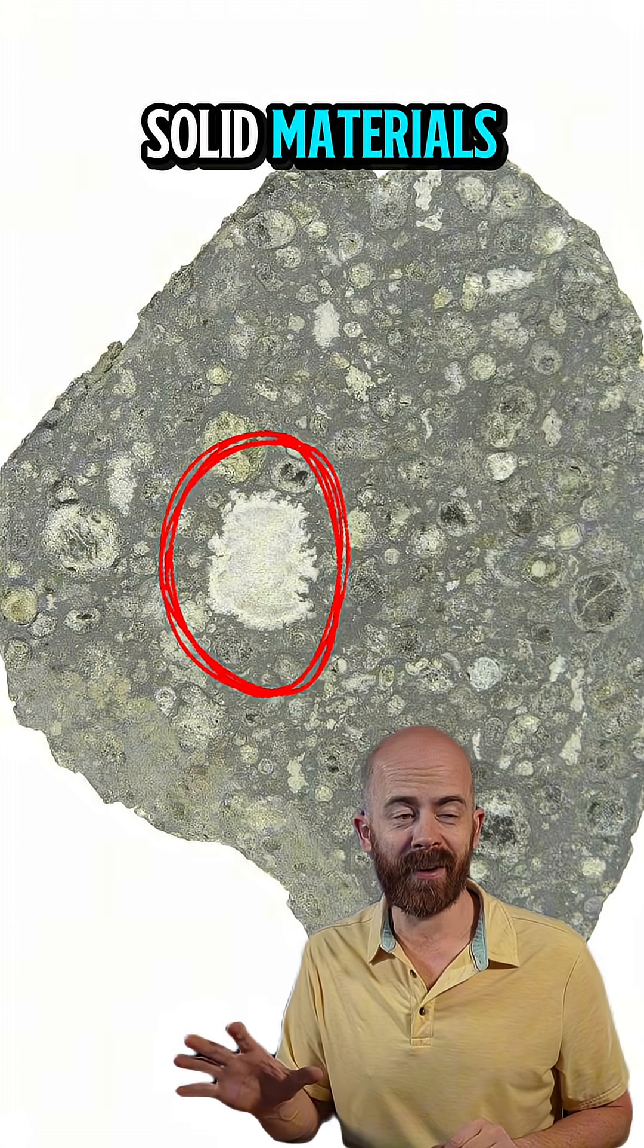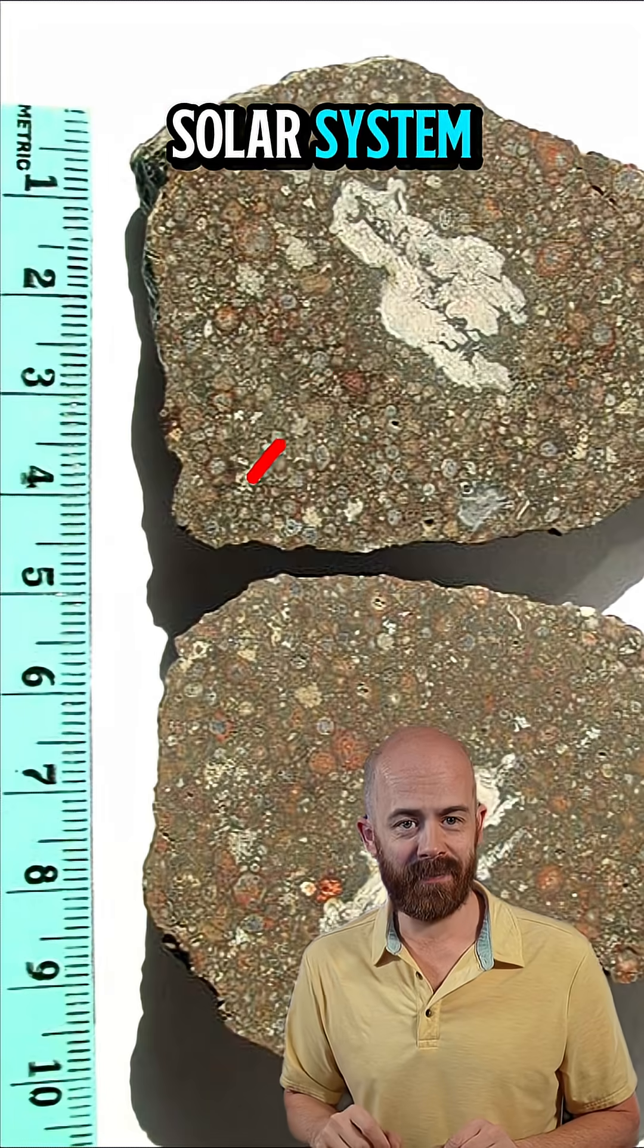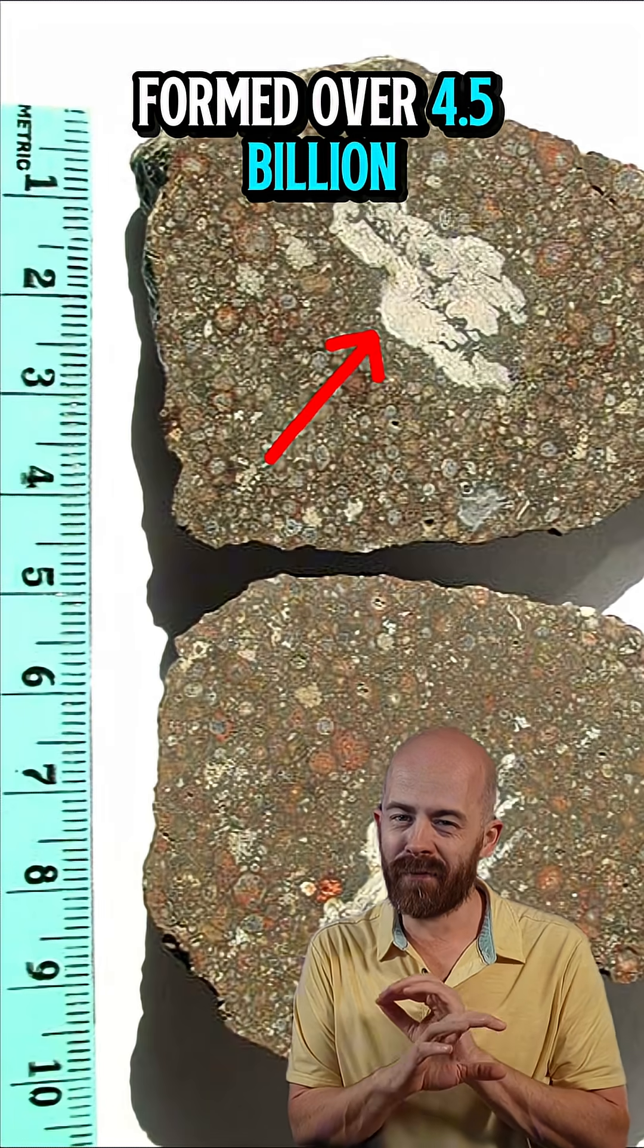and are some of the oldest solid materials in our entire solar system. CAIs formed over 4.5 billion years ago, right after the sun was born.